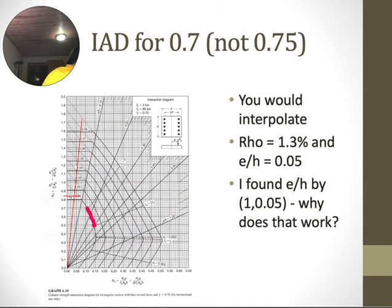That's 1 percent, that's 2 percent, so I just went 0.3 between those two lines. You can see right here. Then I went over and found e over h by doing 1 and 0.05, because that's the slope. e over h is 1 over the slope. I got this point right there.